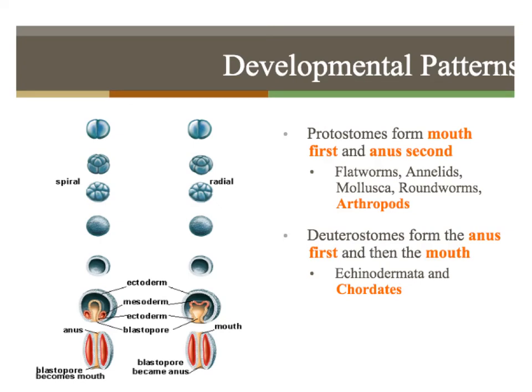Lastly, we have developmental patterns. We have two words describing two ways of developing: protostomes and deuterostomes. Protostomes form their mouth region first and the anus second. Examples of protostomes are flatworms, annelids, mollusks, roundworms, and arthropods — all not super complex. Deuterostomes are the animals that form the anus first and then the mouth.